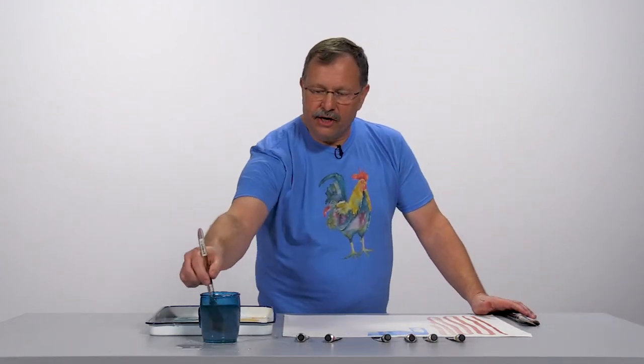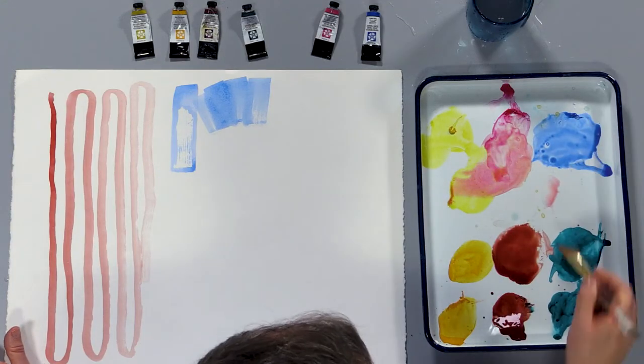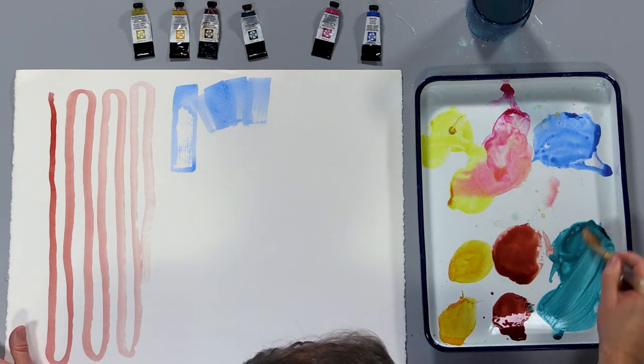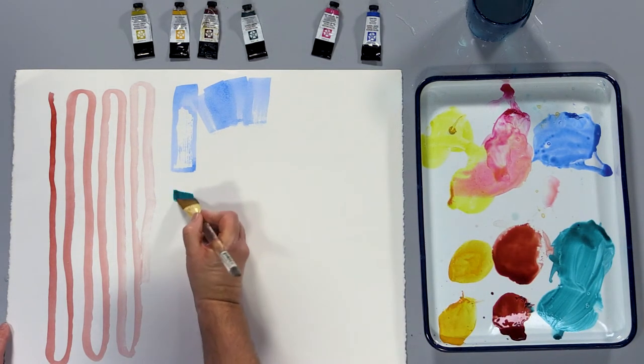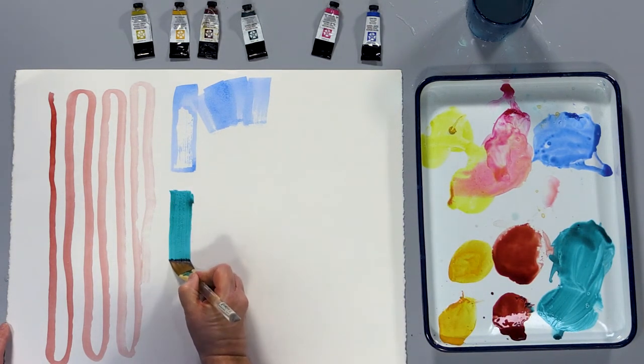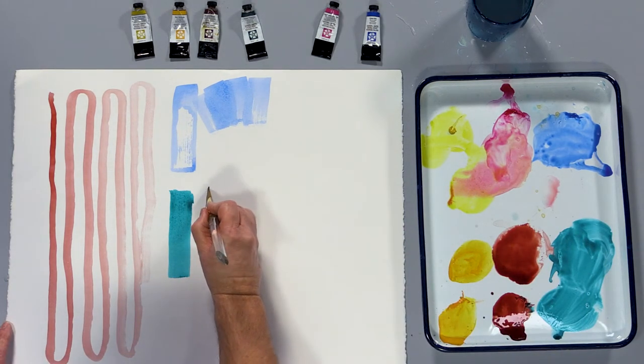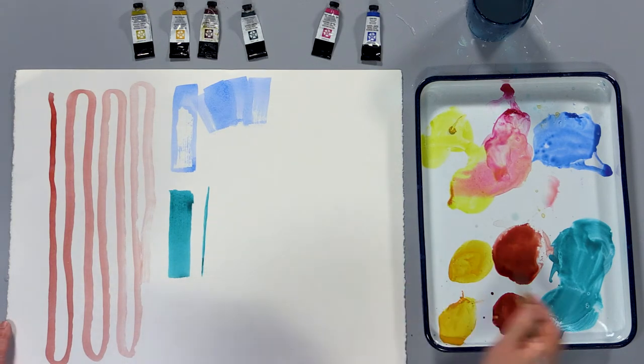The third type is the angled brush. In this one, you have just a little bit more control. I can do nice wide strokes. I can turn the brush on the chisel and do nice little thin strokes.